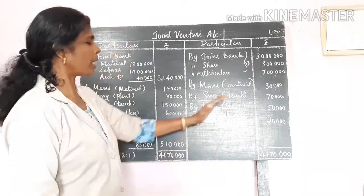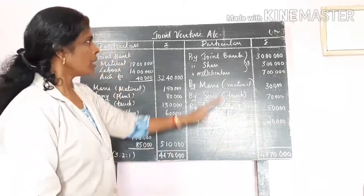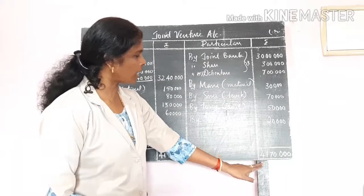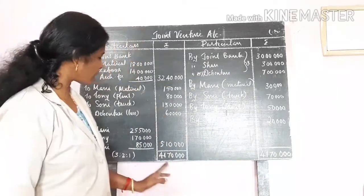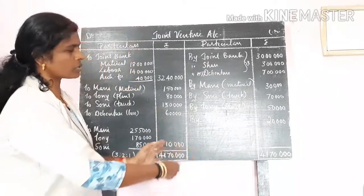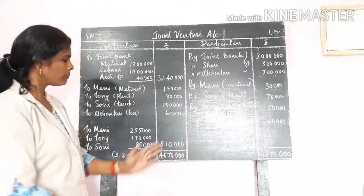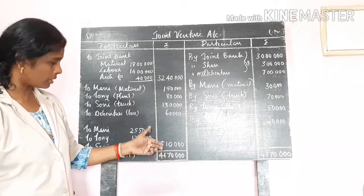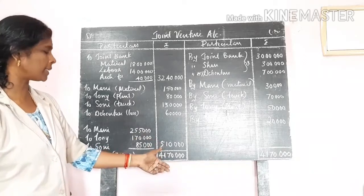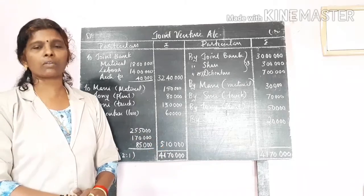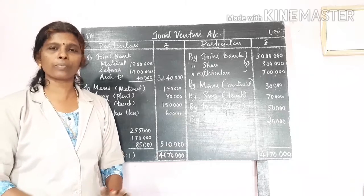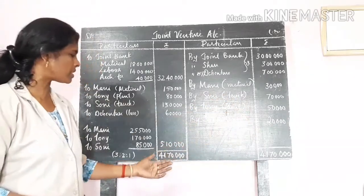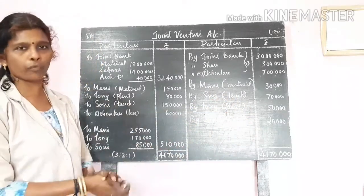Now the credit side total is Rs. 41,70,000. Looking at both sides, the difference in the balance is Rs. 5,10,000. Rs. 5,10,000 is the profit, because the credit side is more than the debit side — that means profit.